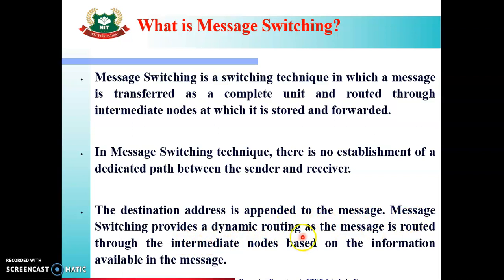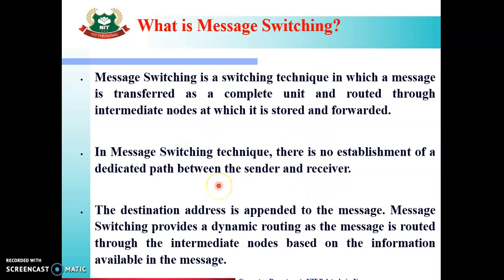The destination address is appended to the message. Message Switching provides dynamic routing as the message is routed through the intermediate nodes based on the information available in the message. We add the destination address at the end of the message, and the message switch performs dynamic routing — selecting the best available path for the data.